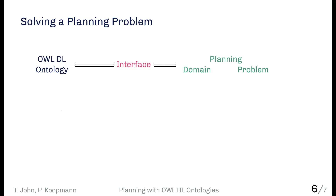Our planning problem consists of several components: on one side an ontology described in some description logic, and on the other side a planning specification consisting of a domain — describing the actions the robot can do and their consequences — and a specific problem defining the initial state of the world and the goal state. We introduce an interface that locks these together, mapping objects in the planning problem to individuals in the ontology, since the two use different languages.